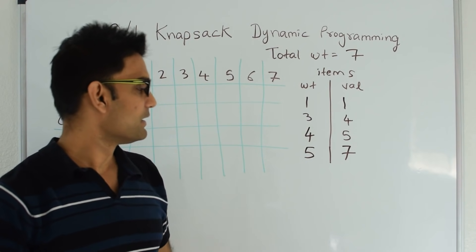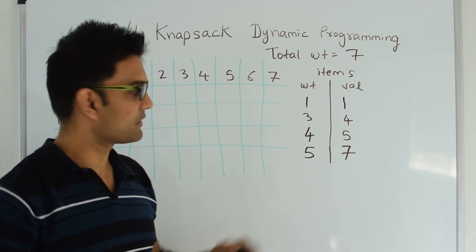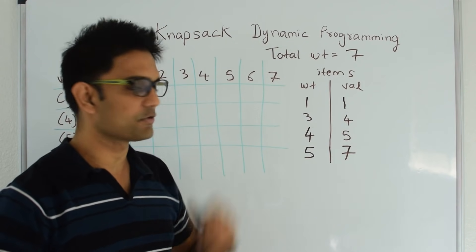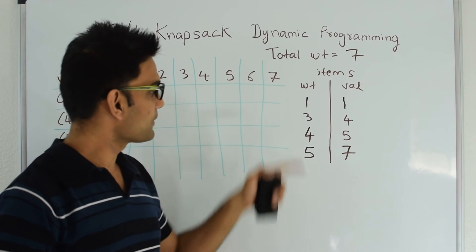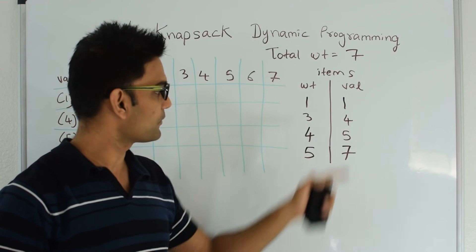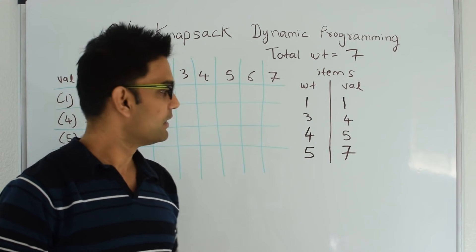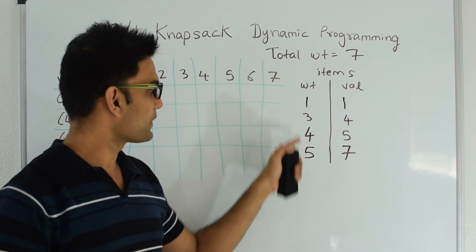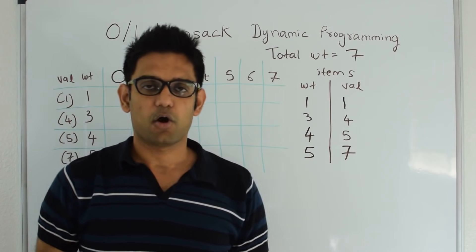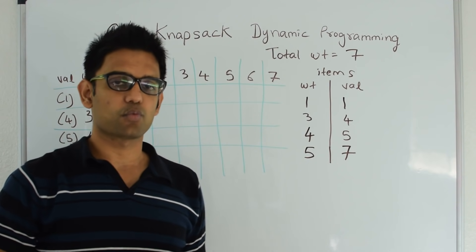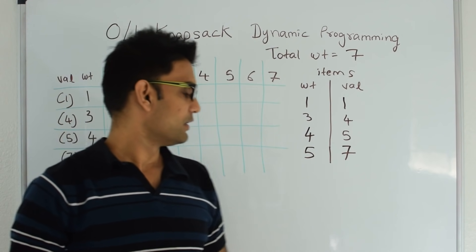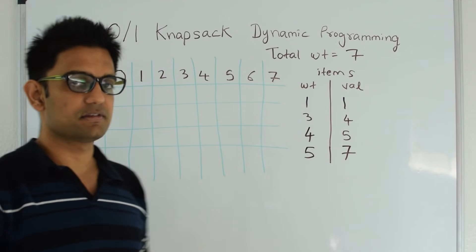Suppose I have a total weight and then I have certain items with their weights and values. How do you pick items from this set such that the sum of their values is maximum but the sum of their weights is less than or equal to the total weight? Also, we have just one quantity of each item. So what does 0-1 mean?